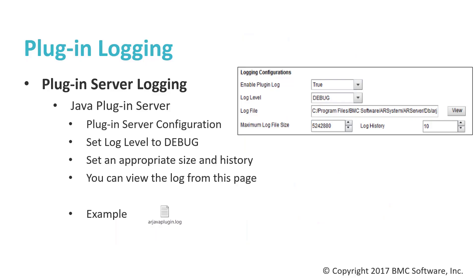The most common log for troubleshooting plugin issues is the Java plugin server log, set in the plugin server configuration page. By default, the log is enabled but set to WARN level, which gives very little information. When troubleshooting, set the log level to debug. There's also a trace level, but it adds information you probably won't use. Make sure you understand the file name and path, and set an appropriate size and log history — the default is about 5 megabytes and 10 backup copies. Once you click apply, debug logging is automatically running; you don't need to restart the Java plugin server.